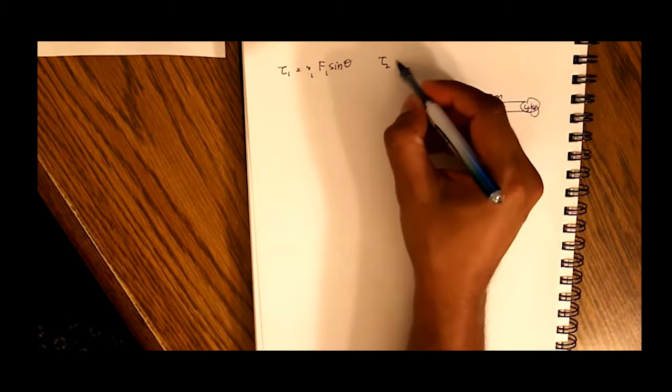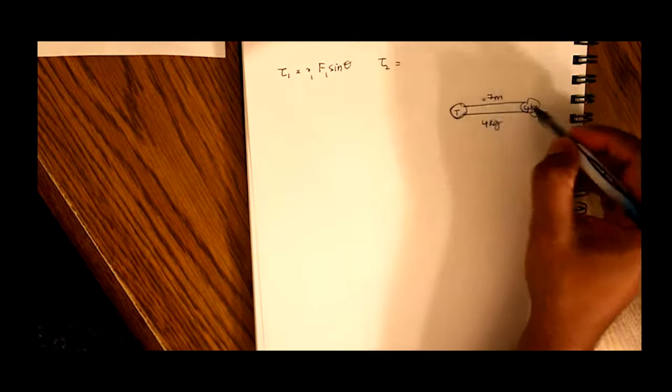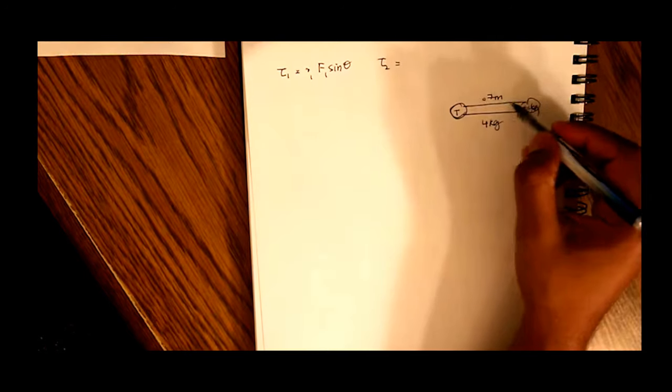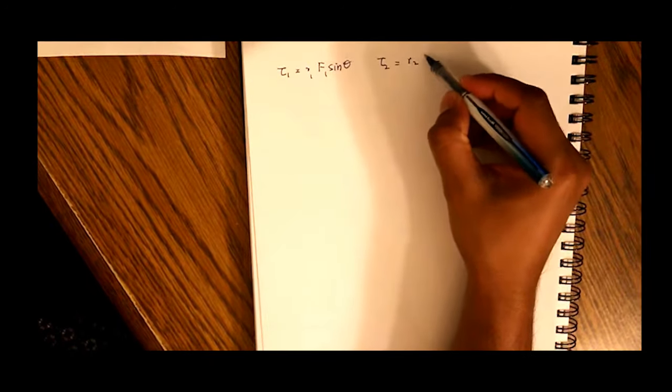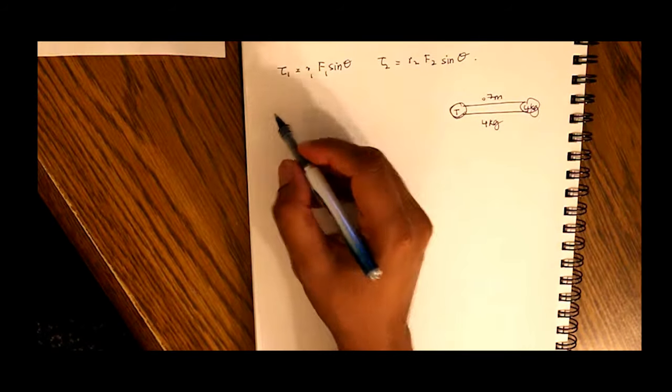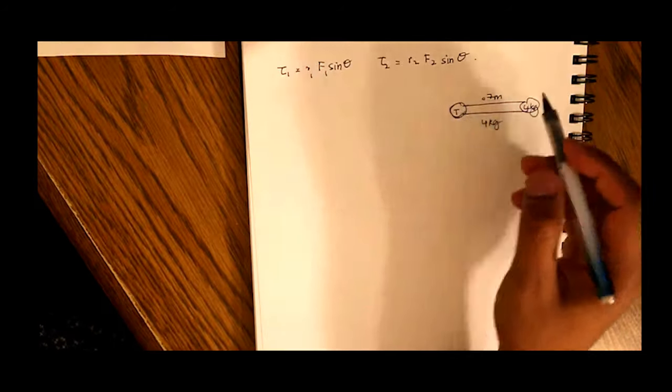And torque 2 equals the torque of his hand. So the center of gravity of his hand is at half the length. So it'll be at 0.35 centimeters. So R2, F2 sine theta. So when we add these two torques up, we'll get the torque at his shoulder.